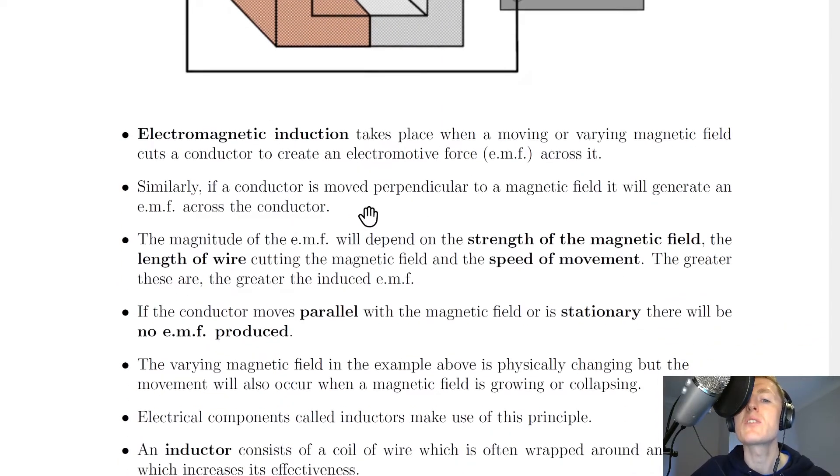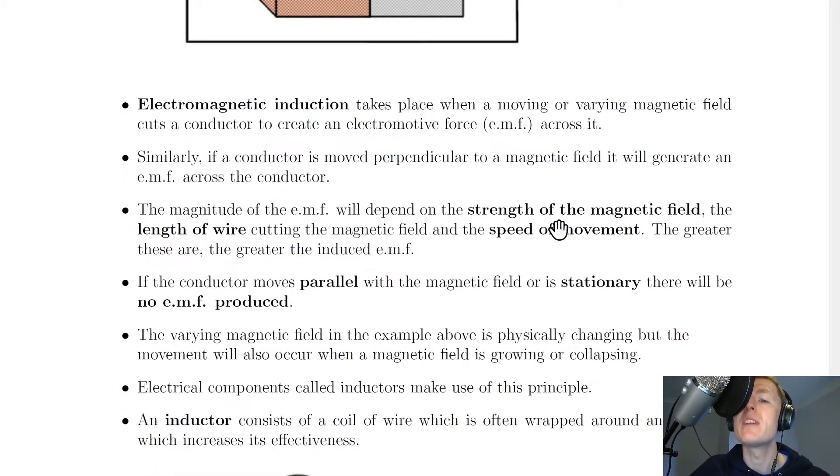Similarly, if a conductor is moved perpendicular to a magnetic field, it will generate an EMF across the conductor. The magnitude of the EMF will depend on the strength of the magnetic field, the length of wire cutting the magnetic field, and the speed of movement.